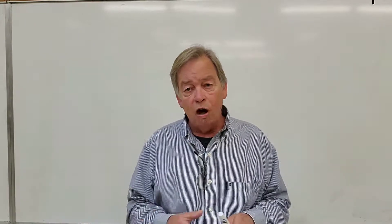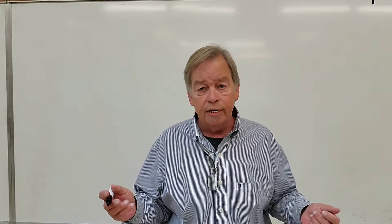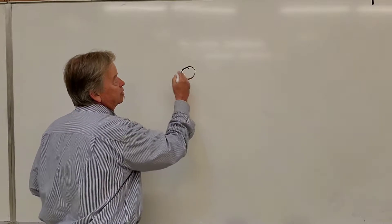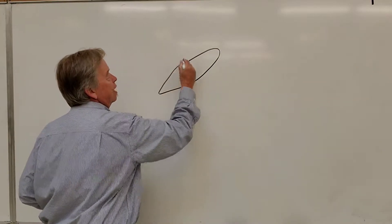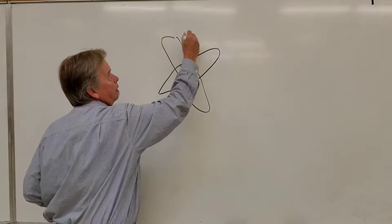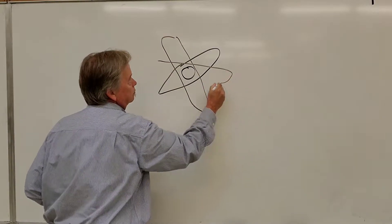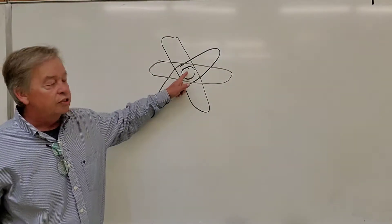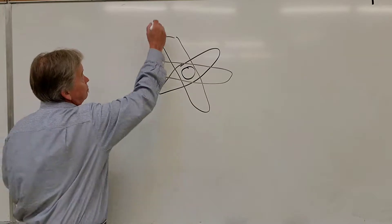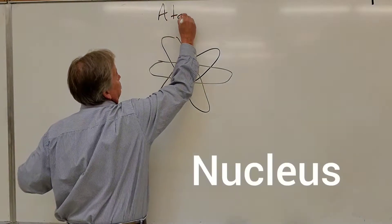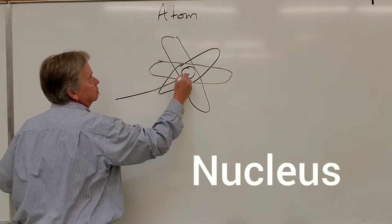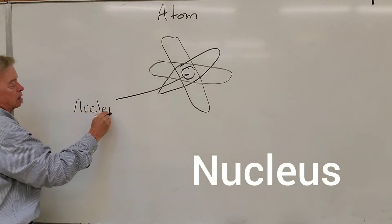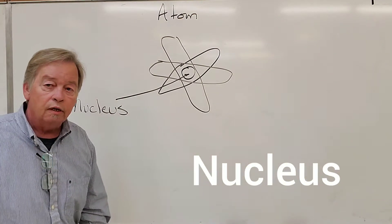Now, atoms, and y'all have seen representations of atoms, you know, basically it's got a center section and it has these things that are orbiting around it. You know, we've seen this type of diagram. Well, this middle part of the atom is called the nucleus of the atom.